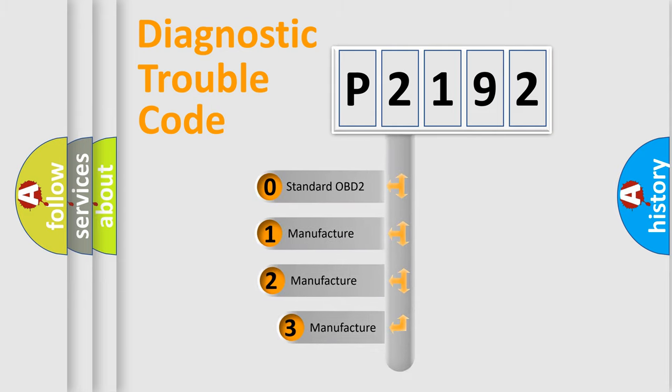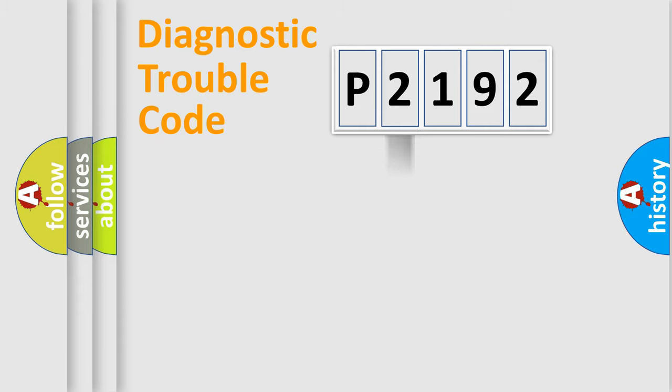If the second character is expressed as zero, it is a standardized error. In the case of numbers 1, 2, or 3, it is a more prestigious expression of the car-specific error.